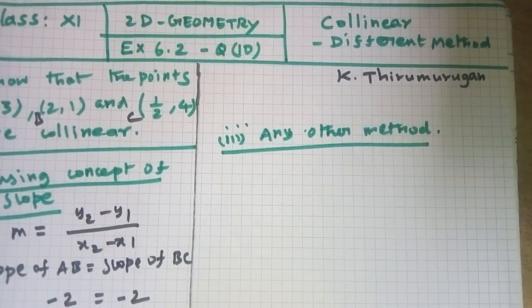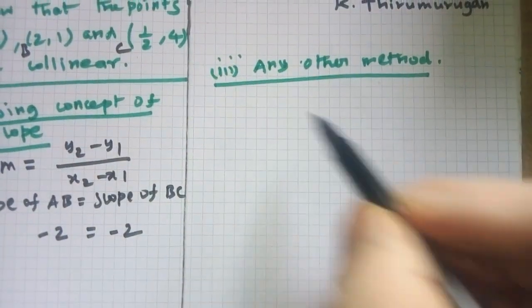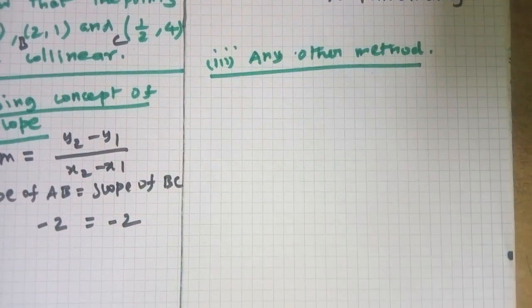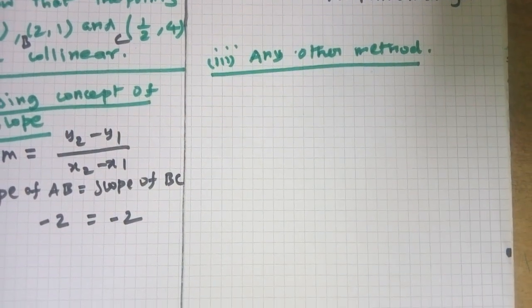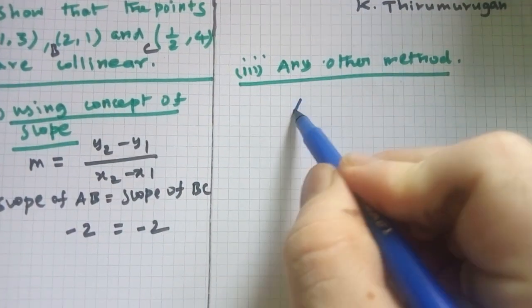Another method: we are going to use the area of the triangle. If the area of the triangle equals zero, then the points are collinear.